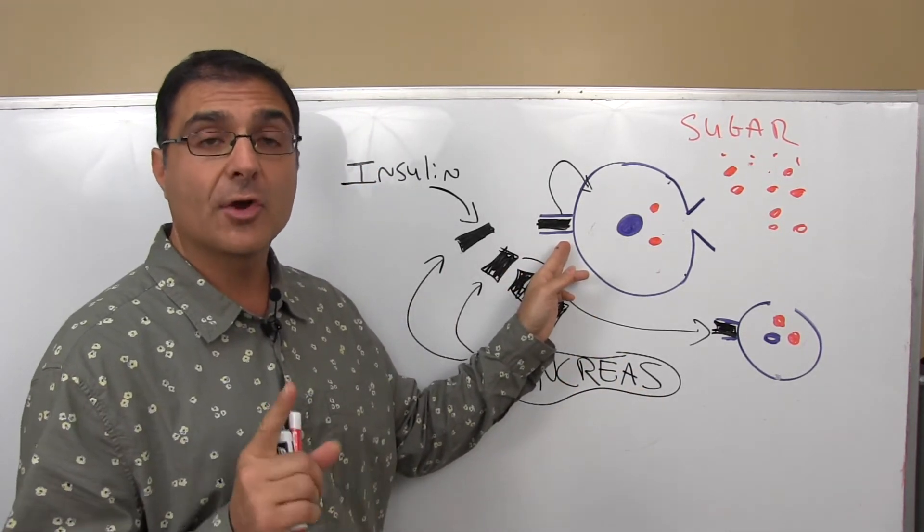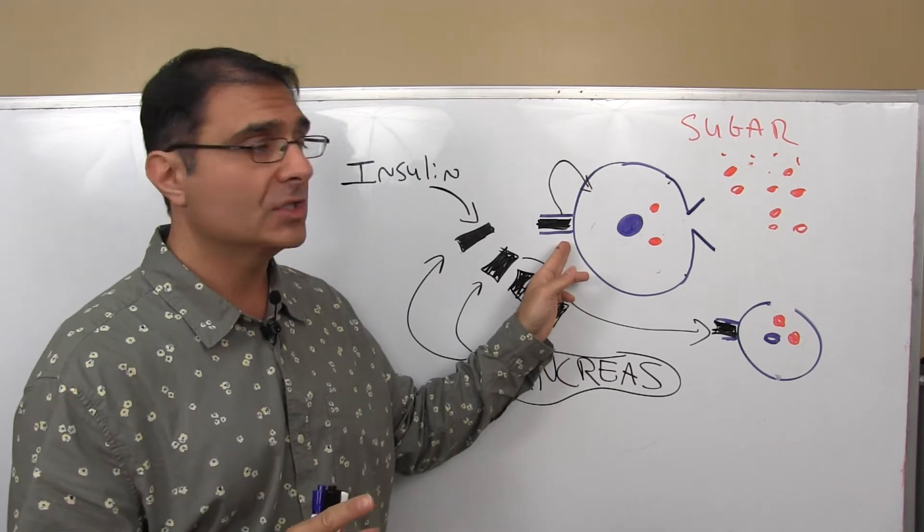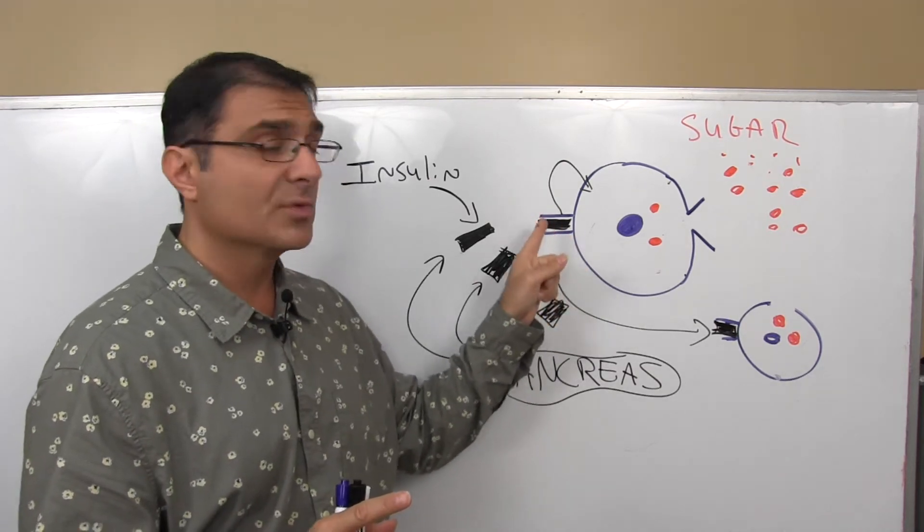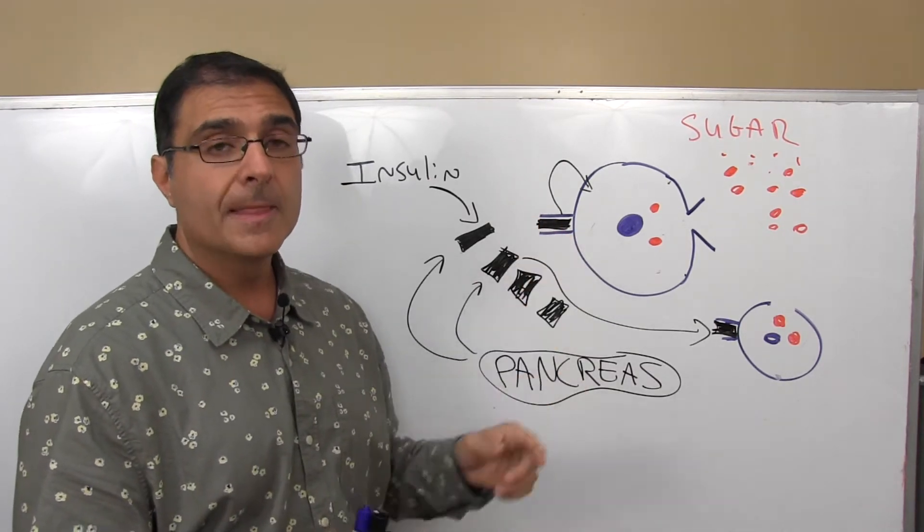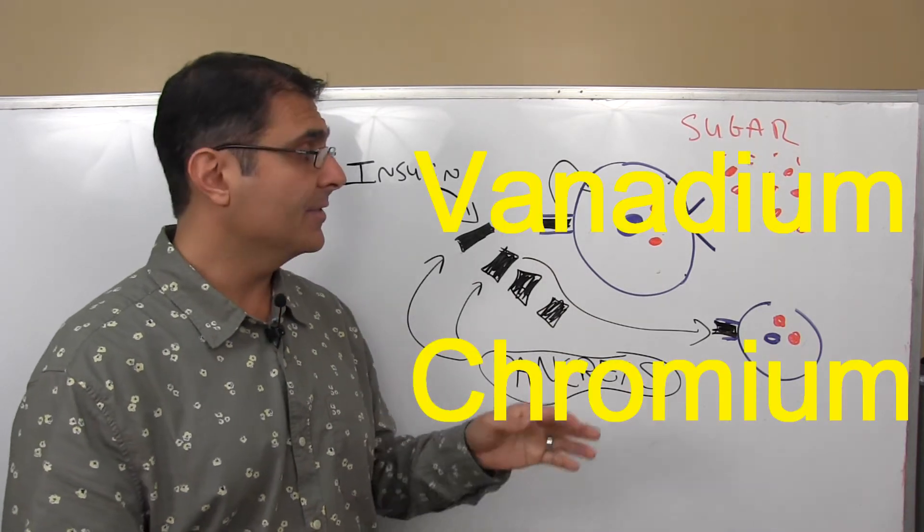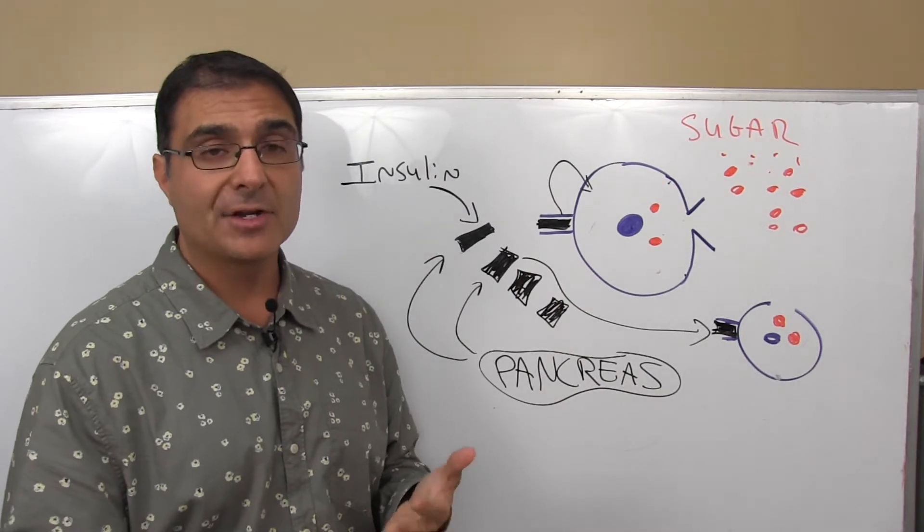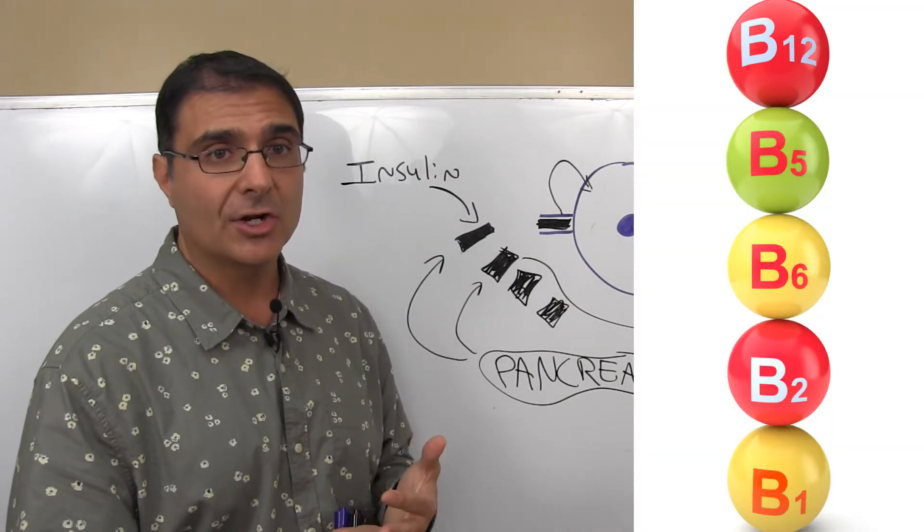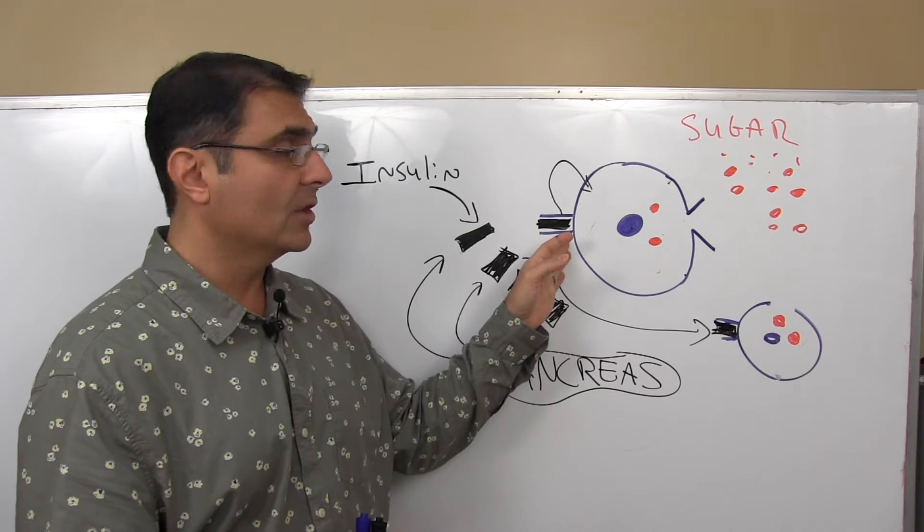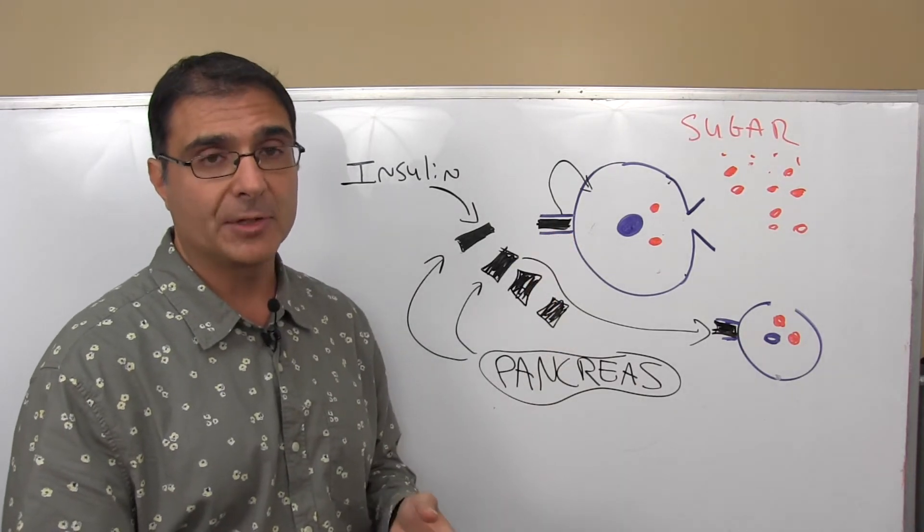Nutritional deficiencies. There are key nutritional deficiencies that will stop these receptors from working, particularly the trace minerals vanadium and the trace mineral chromium. There's also imbalances in various B vitamins that can occur that can also interfere with the effectiveness of this insulin receptor.